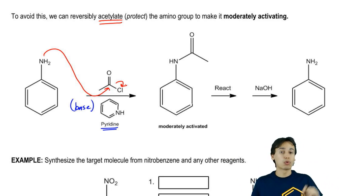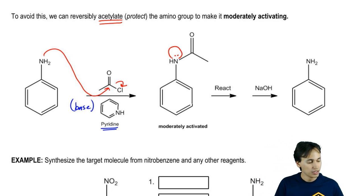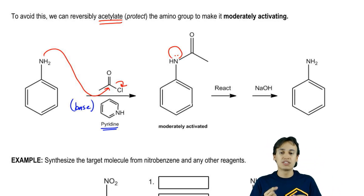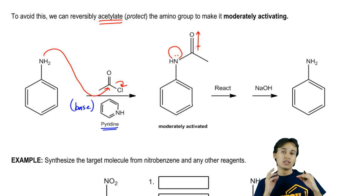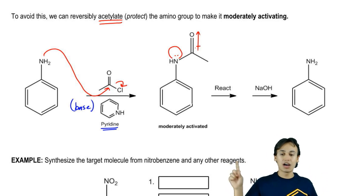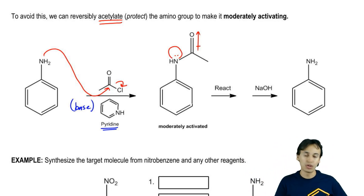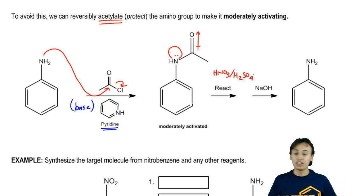Now we've got our acetylated or protected amine. This nitrogen is still donating — it's still activating because it has a lone pair — but it now has that carbonyl next to it that makes it slightly less activating. Instead of being strongly activating, now it's just moderately activated. Because now that it's moderately activated, I can run my reaction on it, so I could then do my nitric acid over sulfuric acid and get my reaction.